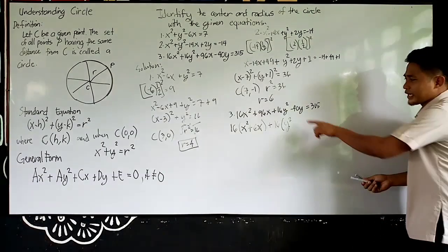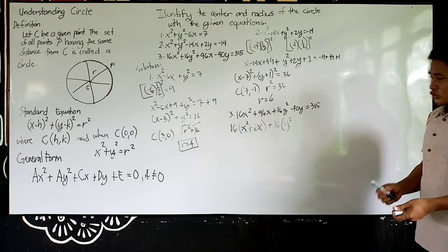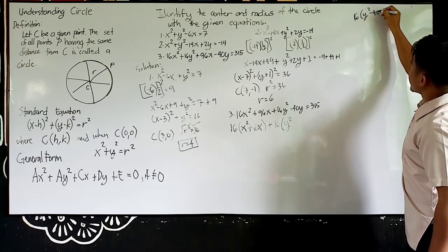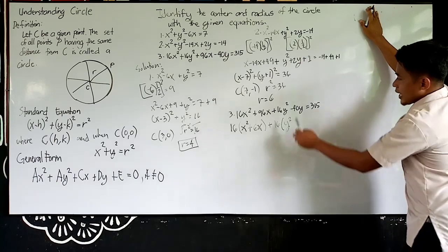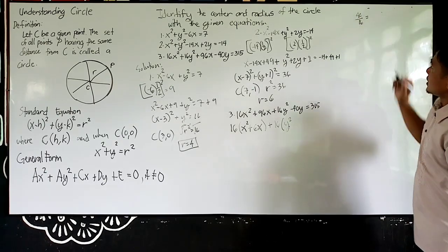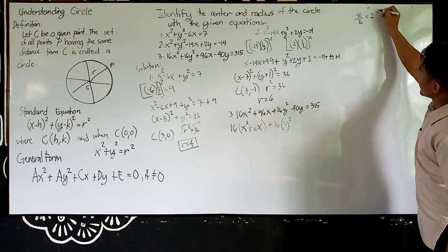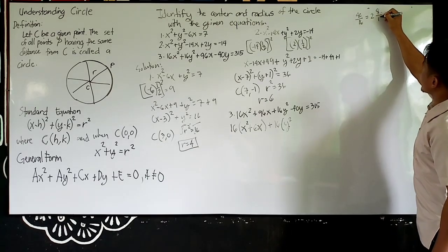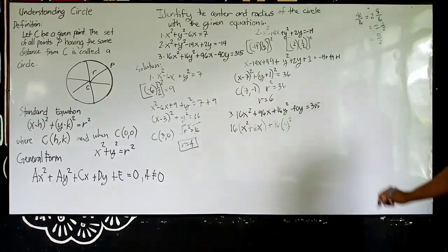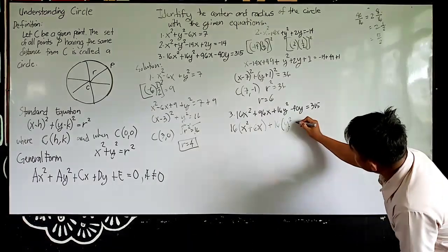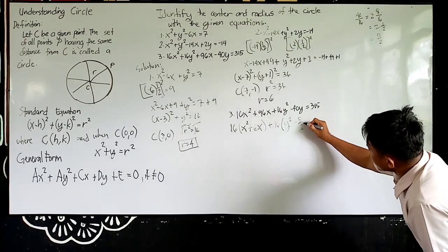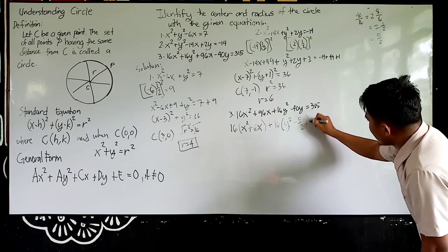So this is 2 and 8 over 16. Or this is 2 and 1 half. Then this is 5 over 2. So factor between 40 sa 16 is negative 5 halves, or you can verify by this by multiplying 16 times 5 halves is 40. And y equals to 315.